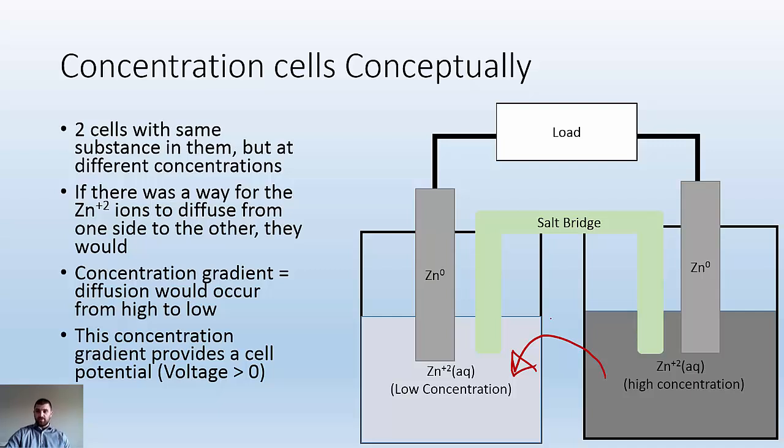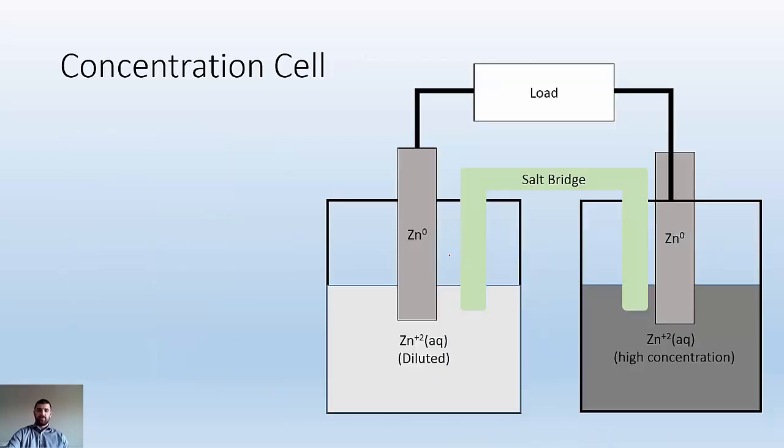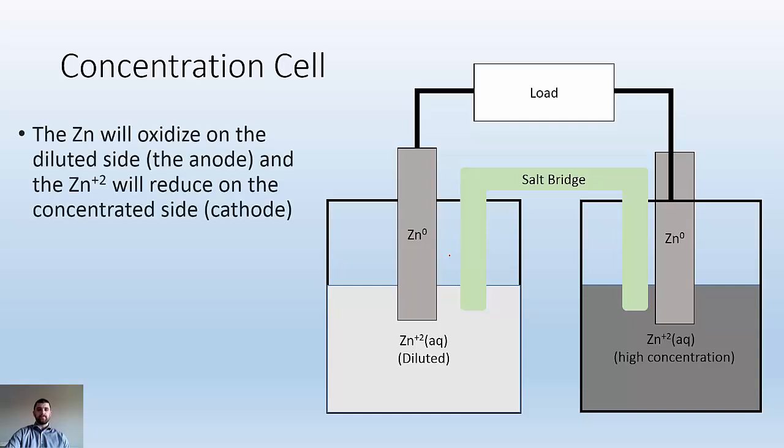What they can do is send electrons from one side to the other. Zinc is going to oxidize on the dilute side because we need to increase the concentration on the dilute side. On the side where it's high concentration, we've got to lower it. So we're going to reduce those cations.